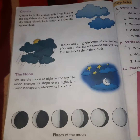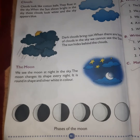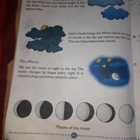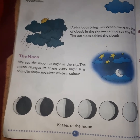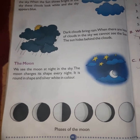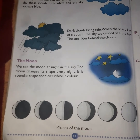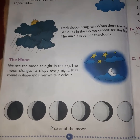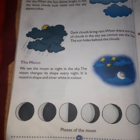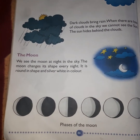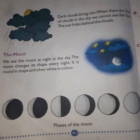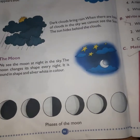In the picture you can see the phases of the moon — different phases of the moon. We can see the full moon, half moon, crescent moon, and no moon. There are six phases of the moon shown in the picture.